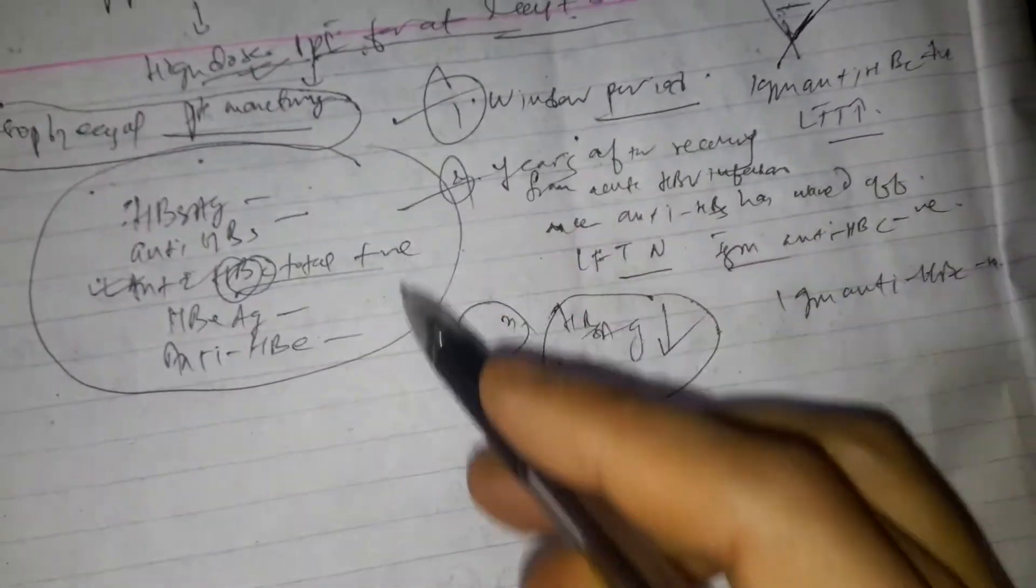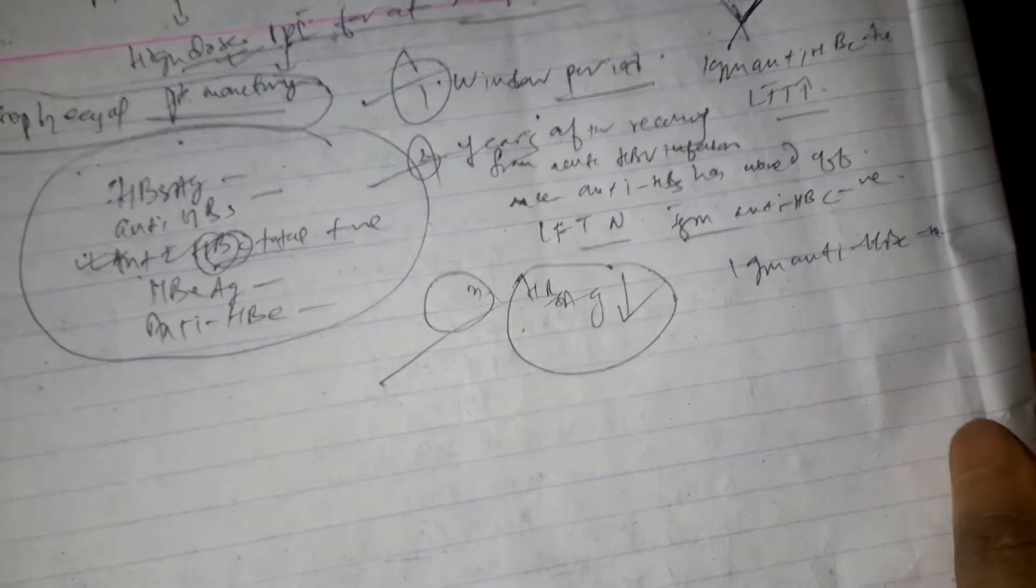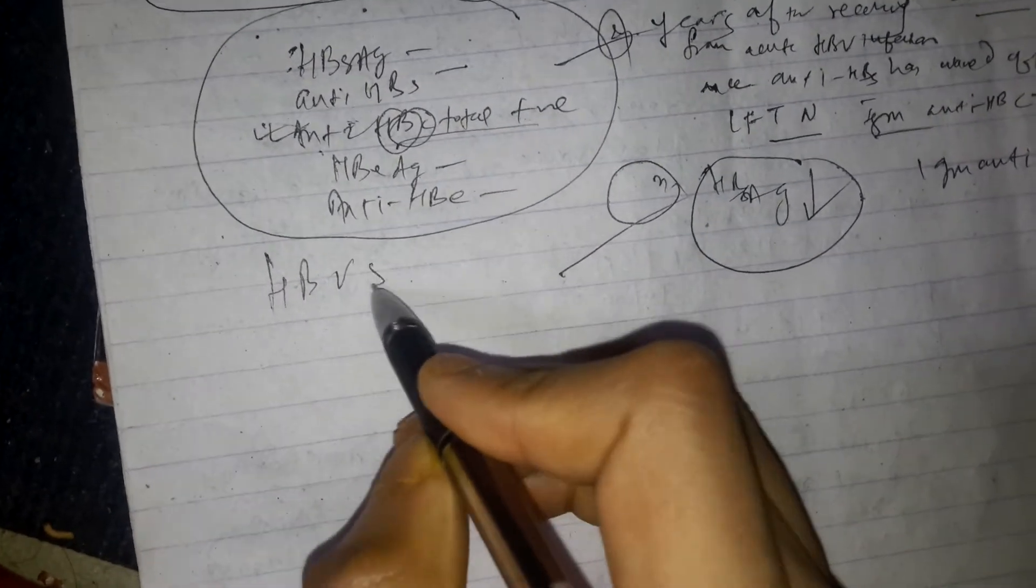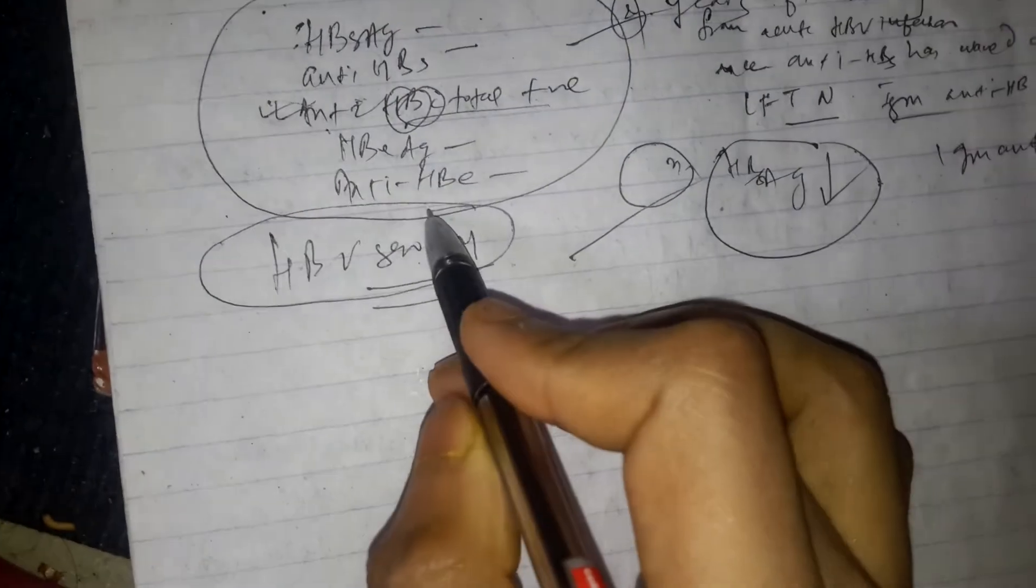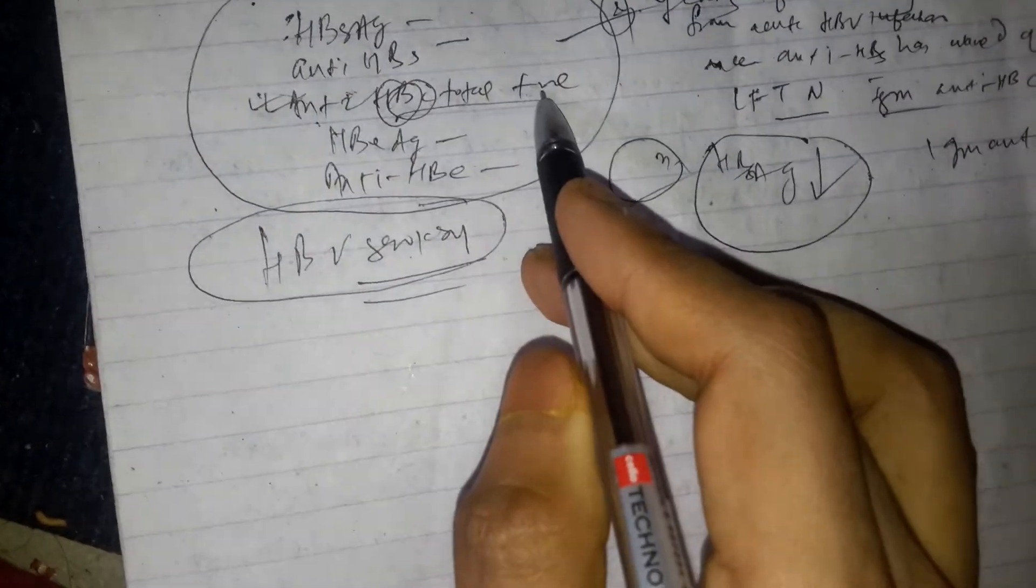So there are three conditions in which we can see anti-HBc. And once a patient with anti-HBc has been identified, the HBV serology should be repeated. Why should we repeat? To ensure that it is not false positive result.